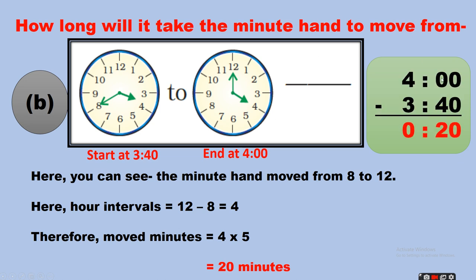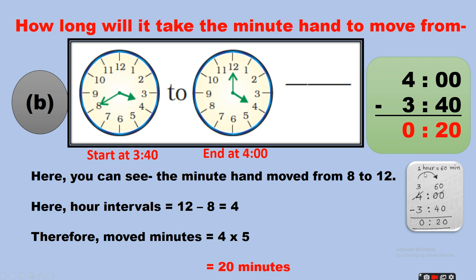Other method: ending time is 4:00 and starting time is 3:40, so the answer is 20 minutes. For the subtraction, since the minutes place shows 0, we borrow from the hours place. Remember: this is the hours place and this is the minutes place. One hour equals 60 minutes, so after borrowing we get 60 minus 40 equals 20, and 3 minus 3 equals 0. That is why we get the answer 20 minutes.